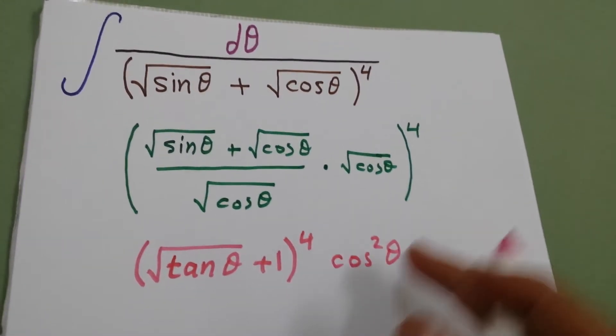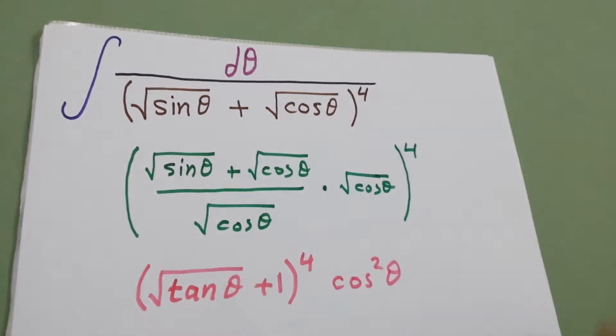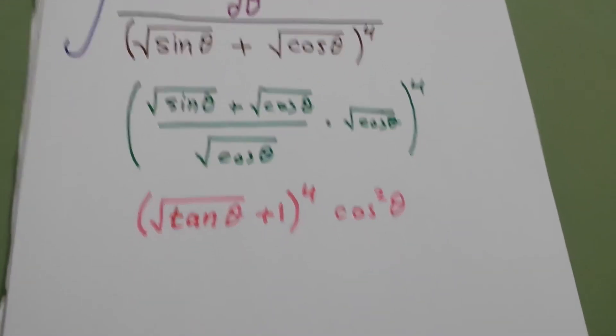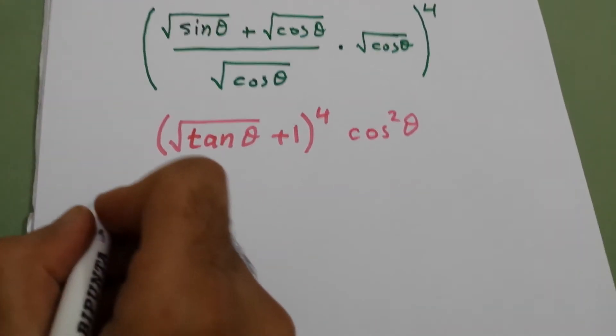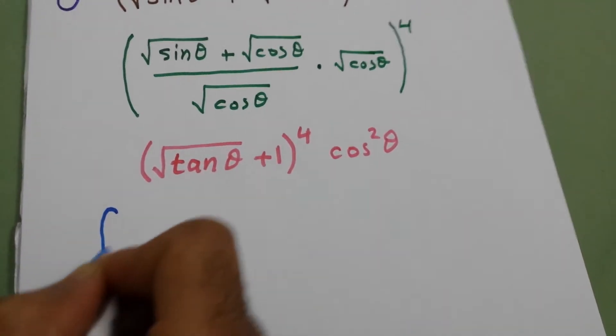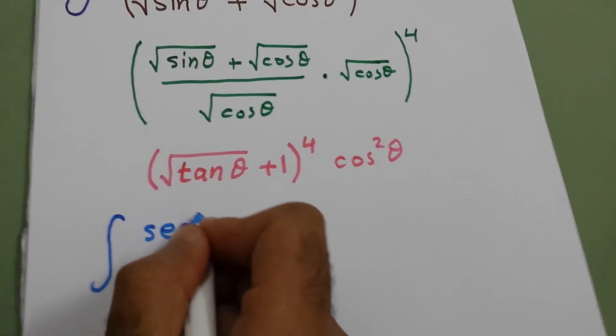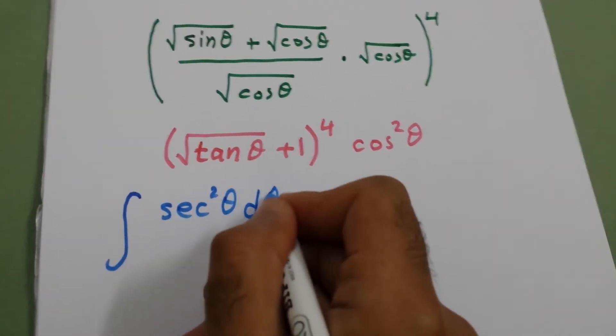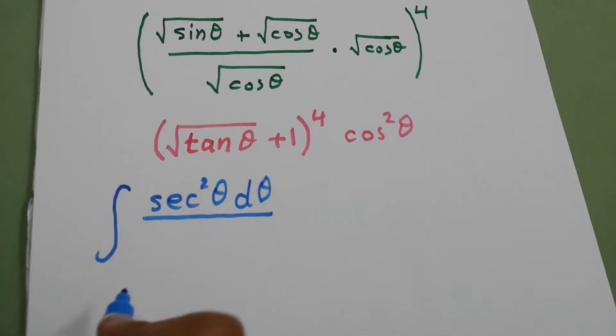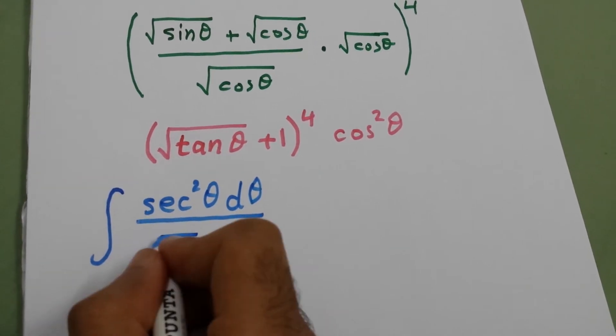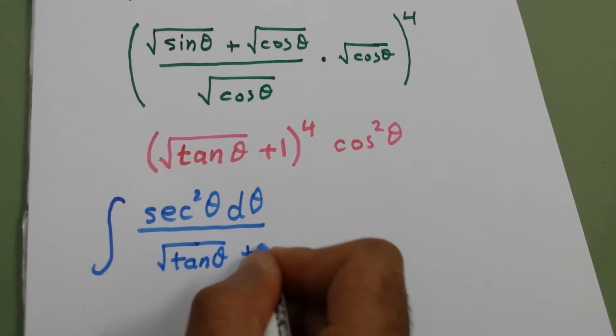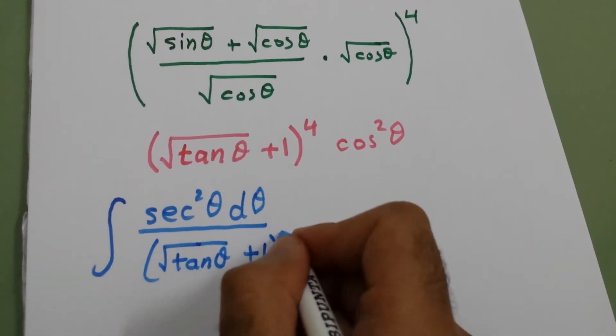This cosine we will put it in the numerator. It will be secant square. So our integral will be integral secant square d theta over square root of tan theta plus one to power four.